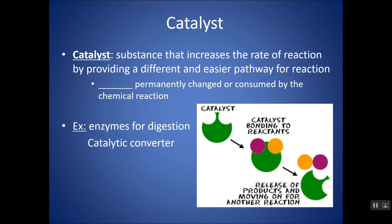A last thing you could do is add a catalyst. A catalyst is a substance that is not permanently changed or consumed by the chemical reaction, but it does help the reaction go faster. It essentially gives it a different pathway. Enzymes are examples of this, as is the catalytic converter in your car. A lot of times it gives the two reactants a place to bond onto where they can come into contact with each other, and then the catalyst releases them, so it's not permanently being changed in any way.